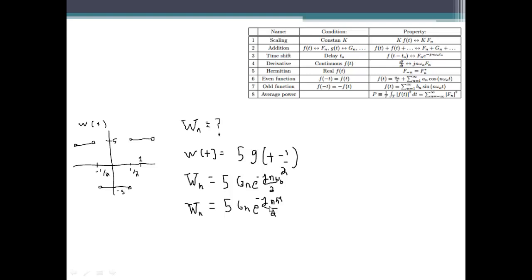Well once again we have to look out for w of 0, the DC value, but in this case it's still the same, it's still 0 because the average value of the function is 0 and the areas cancel out. So in this case w of 0 equals 0.